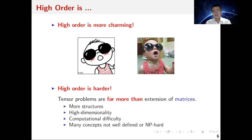I've learned my lesson, especially during this pandemic season. High-order tensors, just like high-order babies, are much harder to handle than matrices. Tensor problems are far more than extensions of matrices. First, tensors have multi-way structures, and if we ignore this structure and treat tensors as matrices, it will lead to suboptimal results.